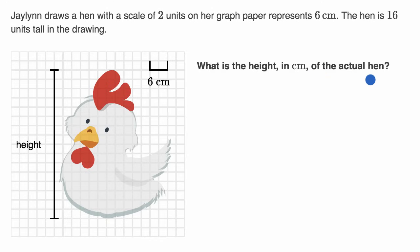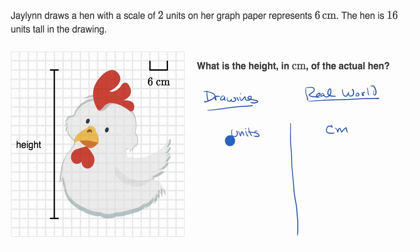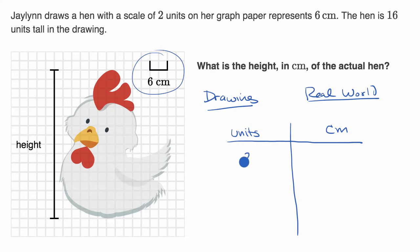Pause this video and see if you can figure that out. Let's set up our table again — drawing on the left, real world on the right. In our drawing, it's just units on graph paper, and the real world is in centimeters. From the scale, we can see that two units in our drawing represent six centimeters in the real world.